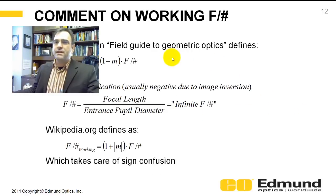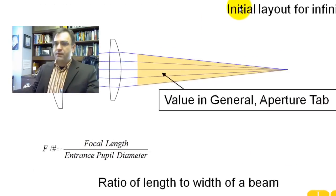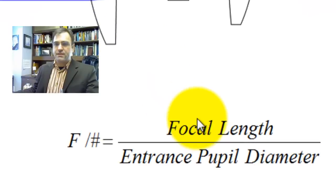And just as an example here, I wanted to quickly talk about working F number. What is working F number? Well, recall, F number for an infinite conjugate is defined as your focal length divided by your entrance pupil diameter.